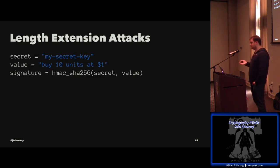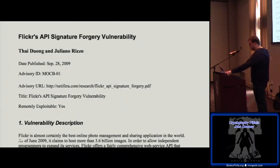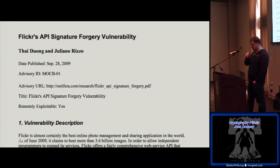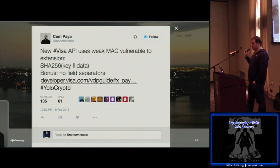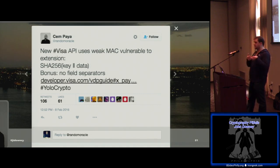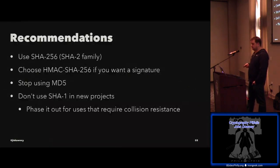What they should have done is use a proper MAC — specifically HMAC, which is built using hash functions in a way that avoids this vulnerability. This isn't just a theoretical vulnerability. Flickr had this and had to iterate their API because of it. Visa actually released a new payments API that had this vulnerability in it — to their credit they fixed it quickly, but it goes to show that even an organization with Visa's InfoSec resources still makes this simple known mistake.